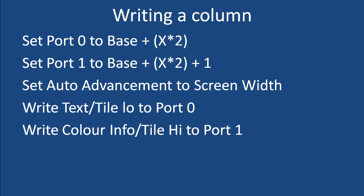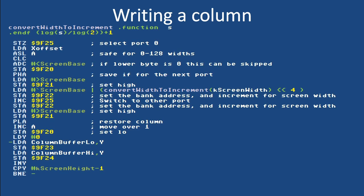Another common thing is writing a column — either text or tiles — in a scrolling game. The high level: set port 0 to be your screen map base plus X times 2, then set port 1 to base plus X times 2 plus 1 to write the word value. Set your auto advancement to the screen width — 32, 64, 128, or 256 tile map — not the actual visible screen width like 40 or 80, but the stride of the actual map inside VRAM. Then write text or tile low to port 0 and your color info or tile high to port 1.